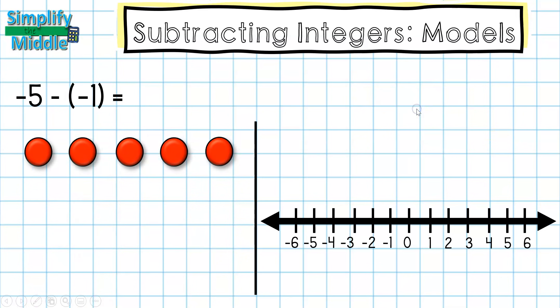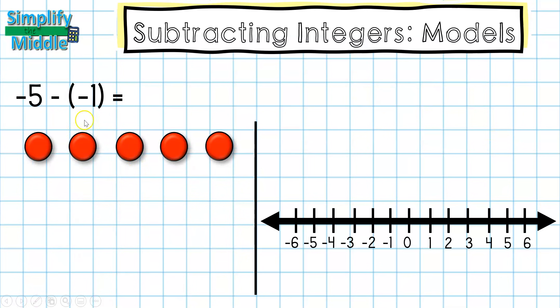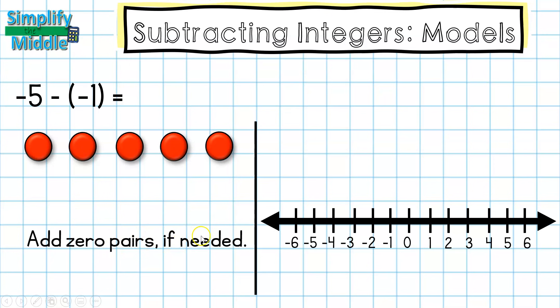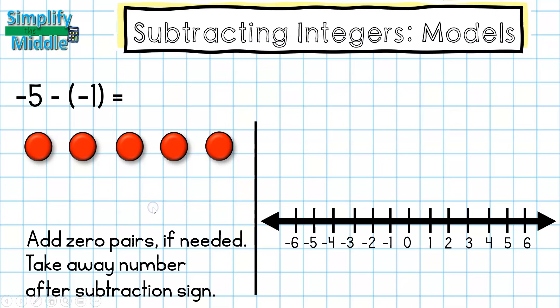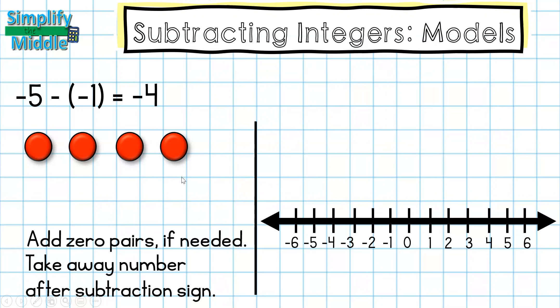Our final problem is negative 5, take away 1 red chip. I already have 5 red chips, so I don't need to add any zero pairs this time. As you may have noticed throughout the examples, a couple required adding zero pairs and a couple did not. For this one, I'm just going to take away the 1 red tile, and that leaves me with 4 red tiles. So my answer is negative 4.